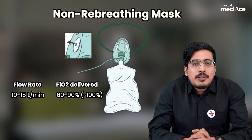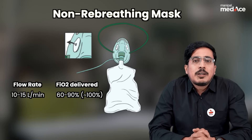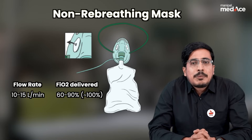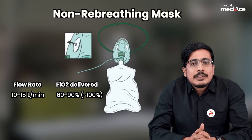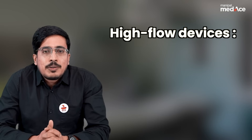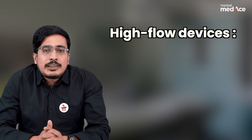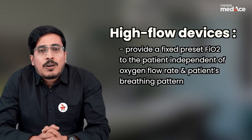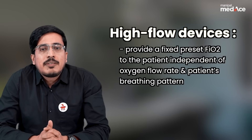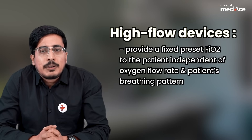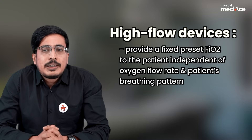The last low flow device is the NRBM mask, which is commonly used for transport of the patient. Oxygen can be delivered at a rate of 10 to 15 liters per minute, and the maximum FiO2 delivered using the NRBM mask is 100 percent. Moving on to high flow devices — these devices always provide a fixed preset FiO2 to the patient, which is independent of oxygen flow rate and the patient's breathing pattern.